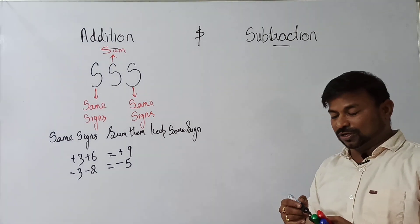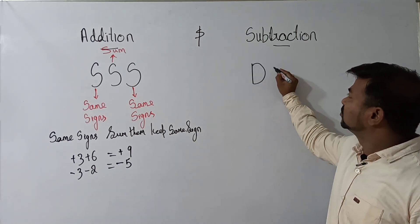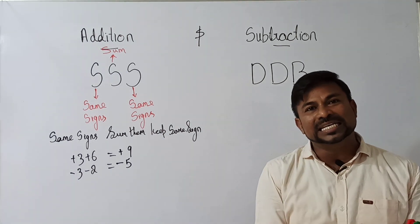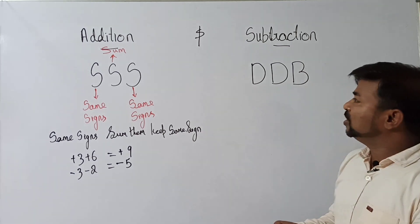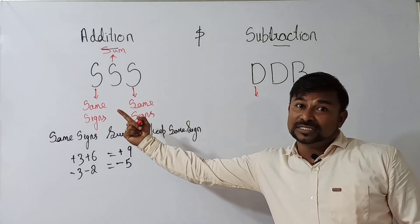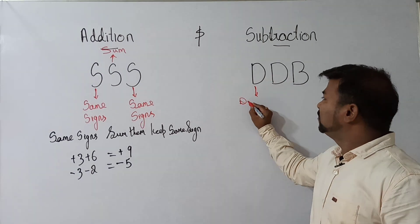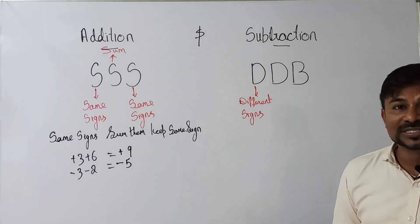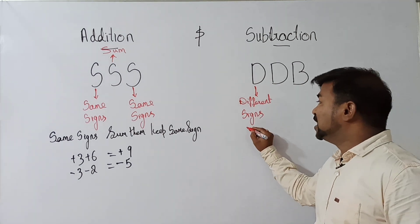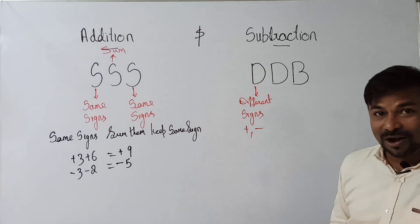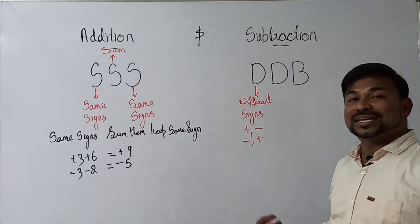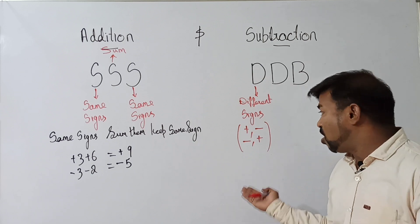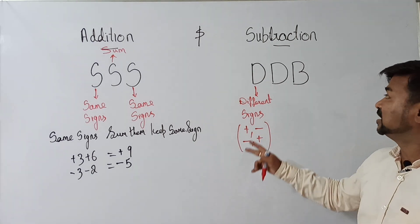Now let us come back to subtraction. For subtraction I like to use the word D, D, B. What is the meaning of the first D? There, S means same signs — here D means different signs. It's nothing but different signs. What is the meaning of different signs? One is plus and the other is minus, or one is minus and the other is plus.